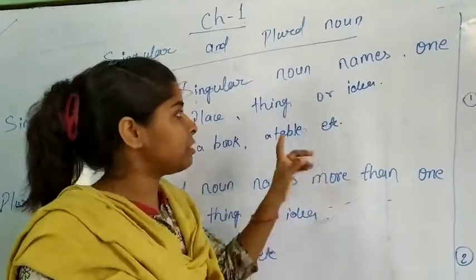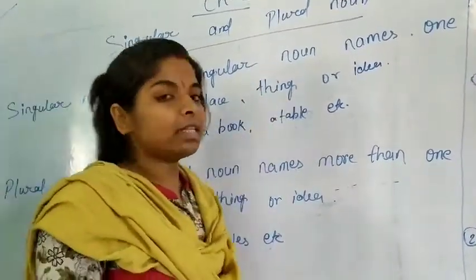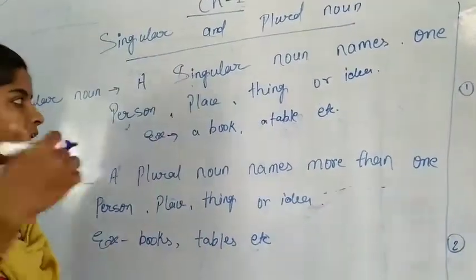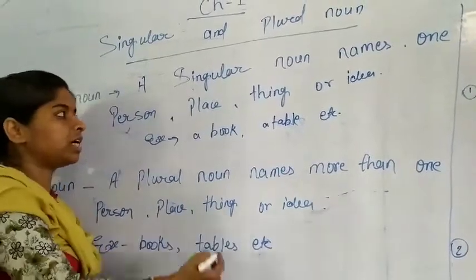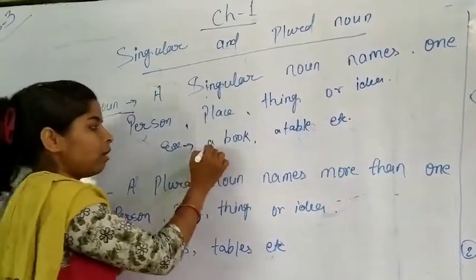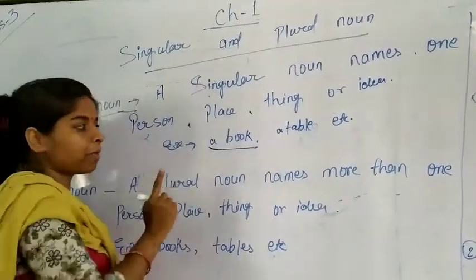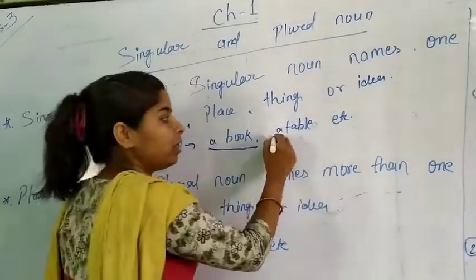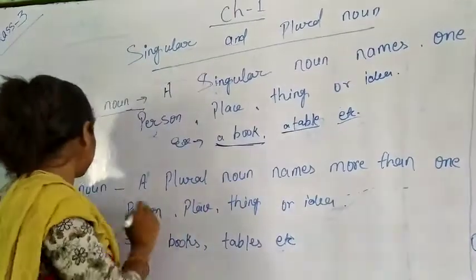Singular noun is the same as one person, a place, things or ideas. Kisi bhi ek vyakti, ya ek jagah, ya ek tarah ke vichar ko jab darshaya jata hai, usse singular noun kaha jata hai. For example, 'a book' — isme ek kitab ke baare mein bataya ja raha hai. That is a book, it is your singular noun. Similarly, a table, etc.